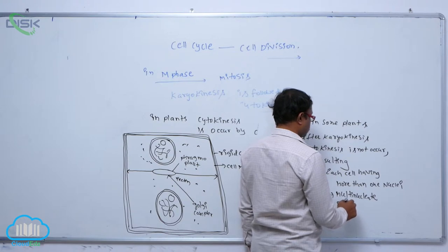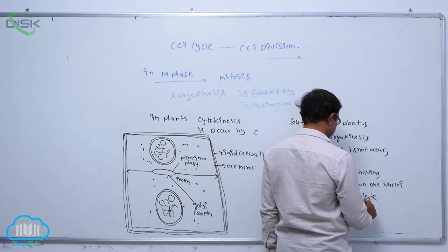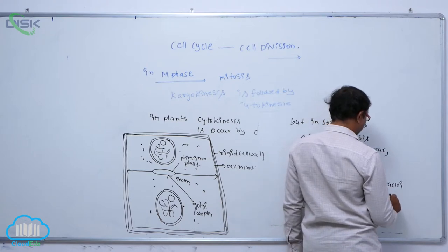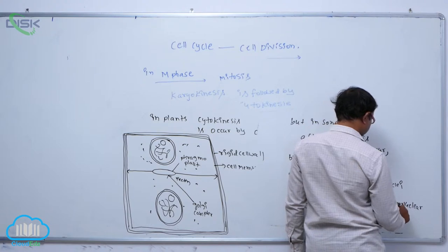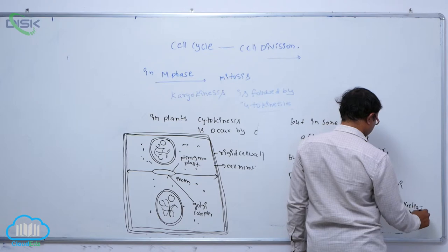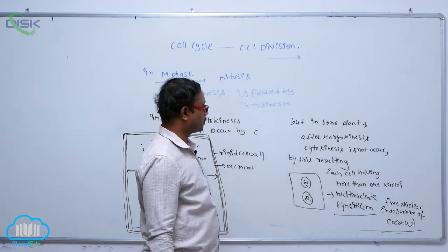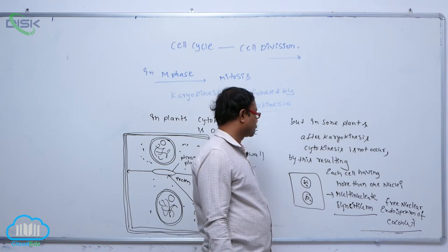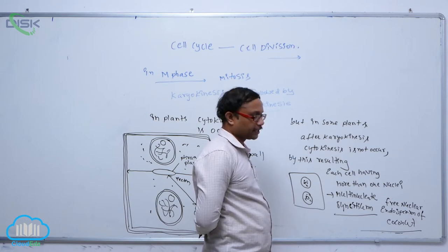This condition is known as syncytium. An example of this is the free nuclear endosperm of coconut. So in some plants, after karyokinesis, cytokinesis does not occur, resulting in each cell having more than one nucleus — a multi-nuclear condition — as seen in the free nuclear endosperm of coconut.